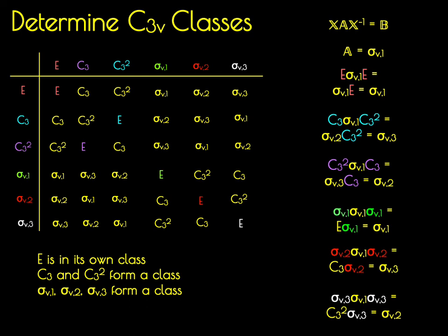Once again, you could look at sigma V2 and sigma V3 for completeness, but you would find that they're conjugate elements with sigma V1. So for all practical purposes, we've assigned every single element in the C3V point group to a class.